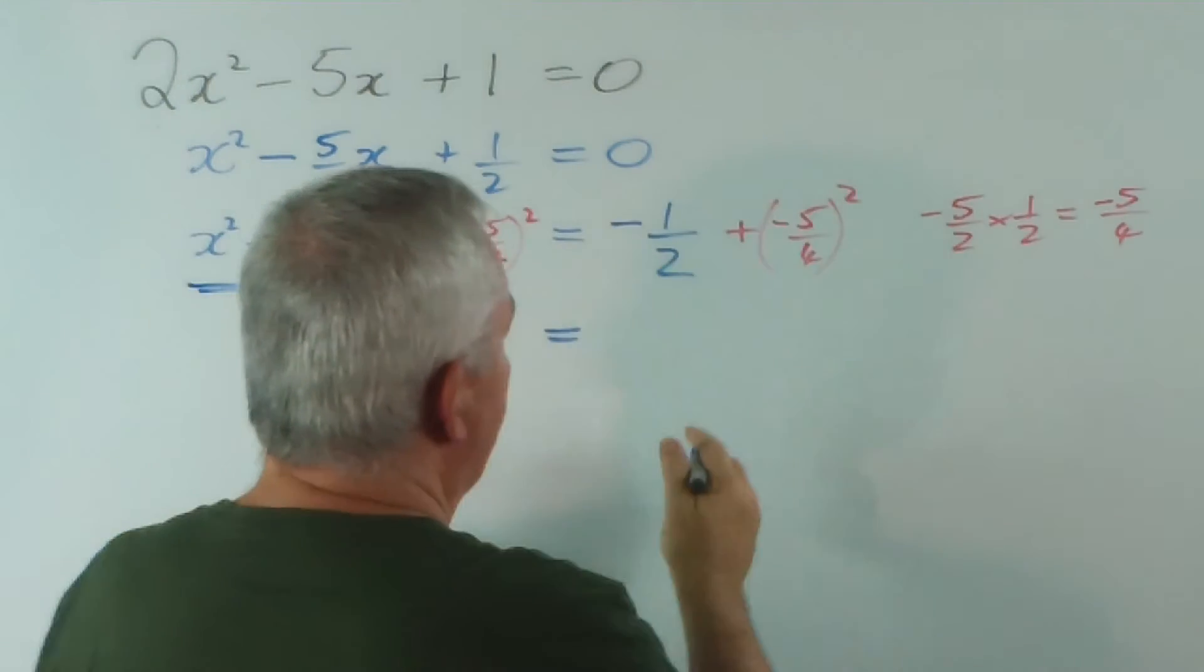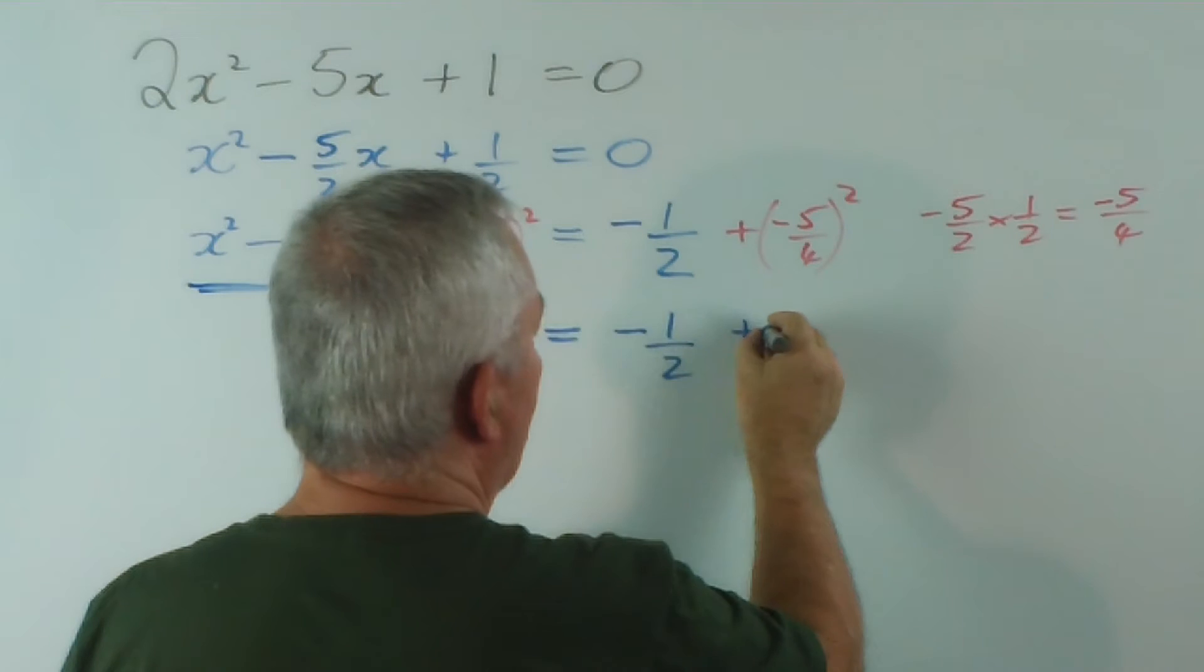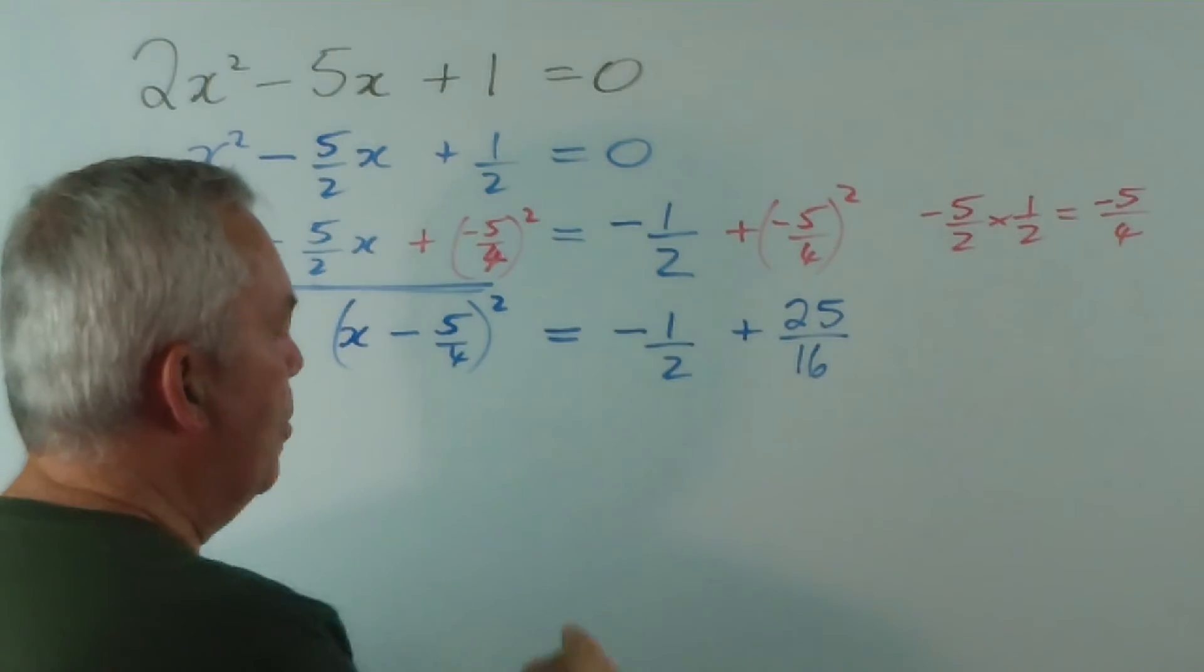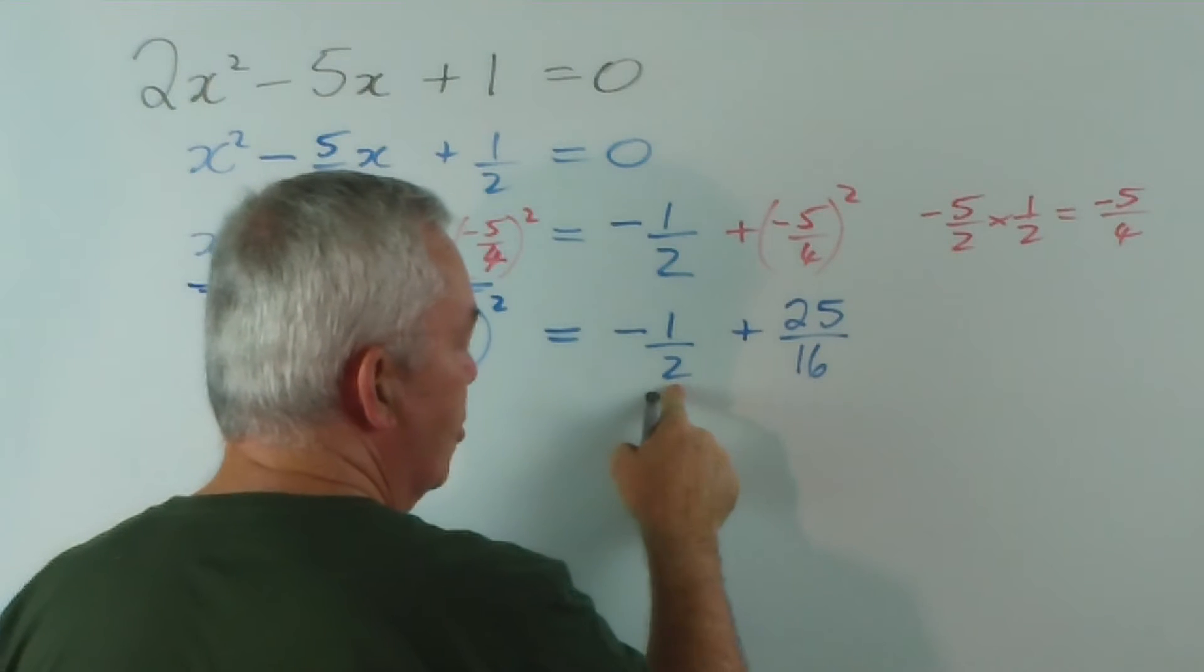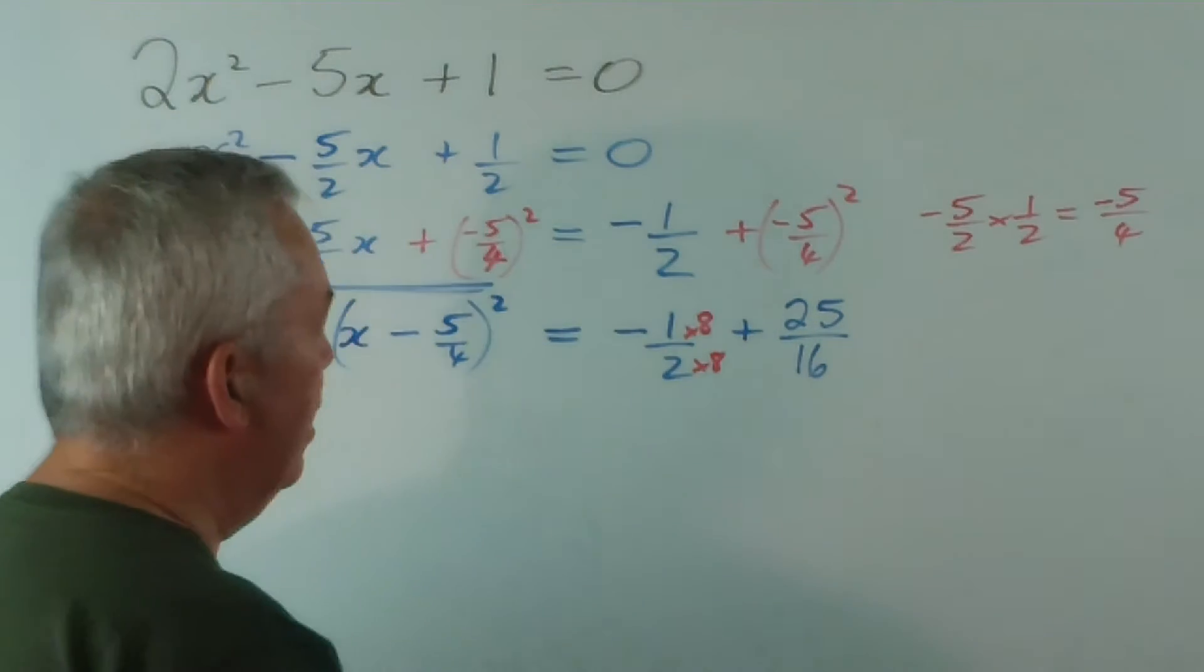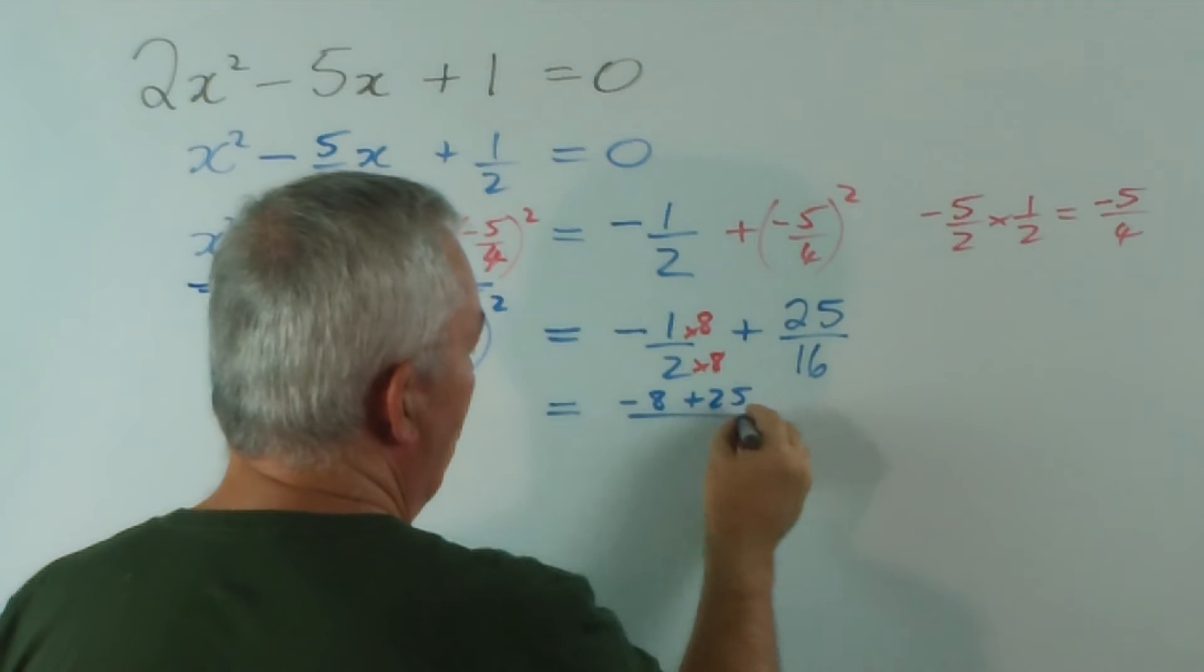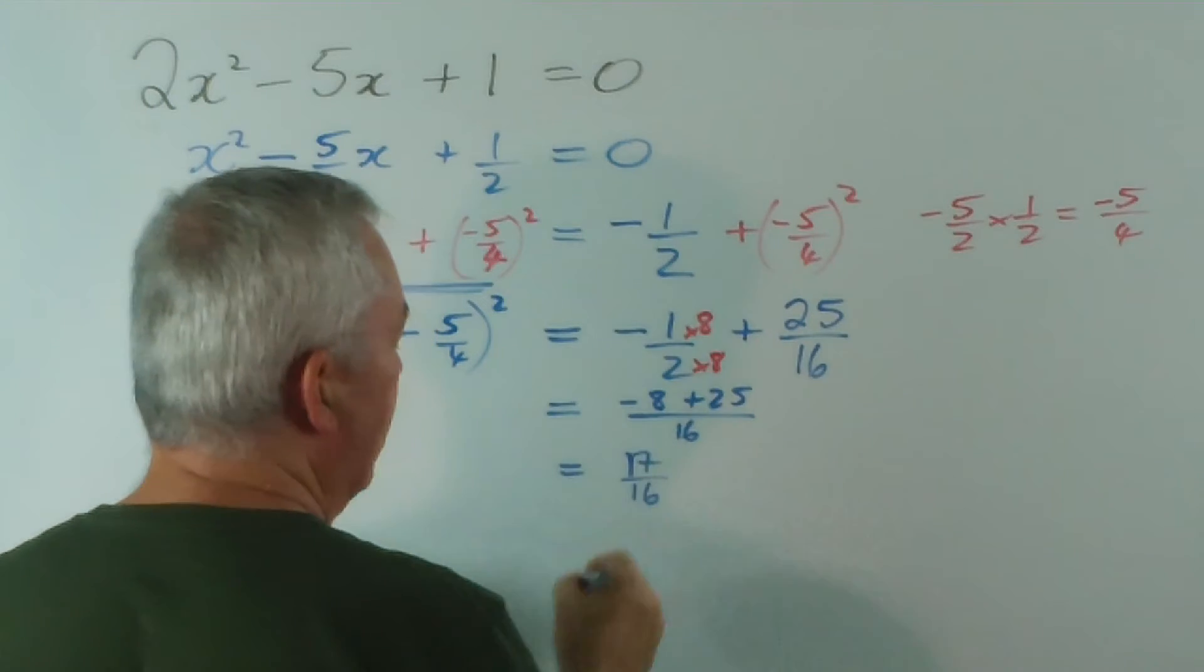Now we've got to work this out. This is negative 1 on 2, or minus a half, negative a half, plus negative 5 squared is 25, and 4 squared is 16. Now I would like to combine these two fractions, so to convert 2 into a 16, I multiply by 8, top and bottom, and I get this, negative 1 times 8 is negative 8, plus 25, all over 16, which is 25 minus 8, 17 on 16, that's very close to 1.